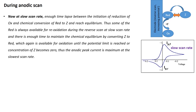At slow scan rate, enough time elapses between the initiation of reduction of ox to form red and the chemical conversion of red to Z, allowing equilibrium between red and Z to be reached. So some of the red is always available for reoxidation during the reverse scan at slow scan rate. And since the scan rate is slow, it will take a long time to reach the potential limit — the starting potential — and that time is enough to maintain the chemical equilibrium between red and Z by converting Z to red.